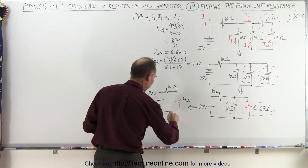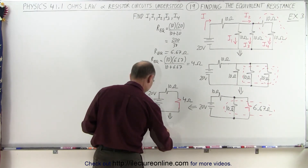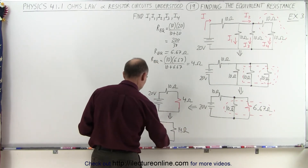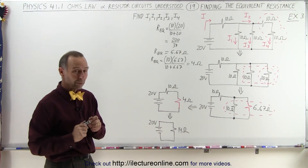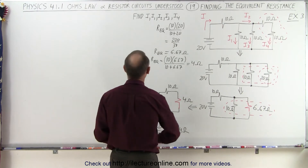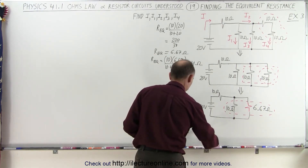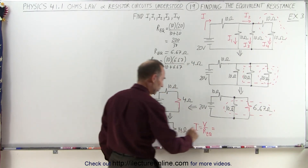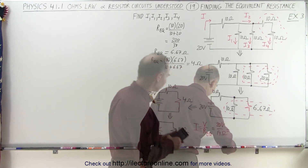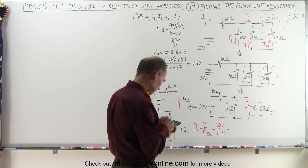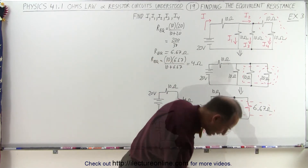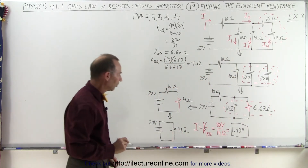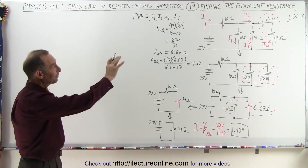Now we have a 4 ohm resistor and a 10 ohm resistor in series, so those two combine: 10 plus 4 equals 14 ohms, with a 20 volt battery. To find the equivalent current, I equals V over R equivalent, which is 20 volts divided by 14 ohms, giving us 1.43 amps as the total current of the circuit.